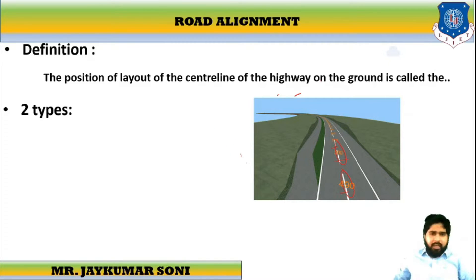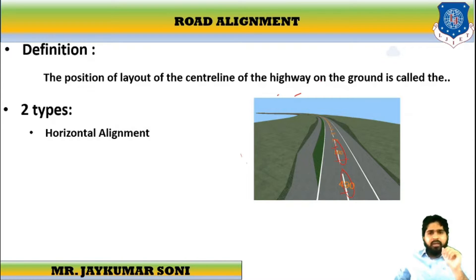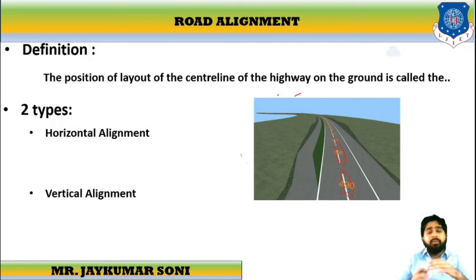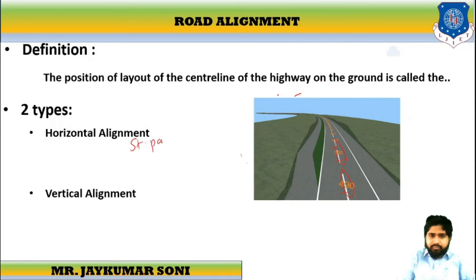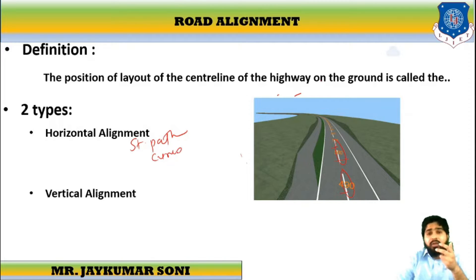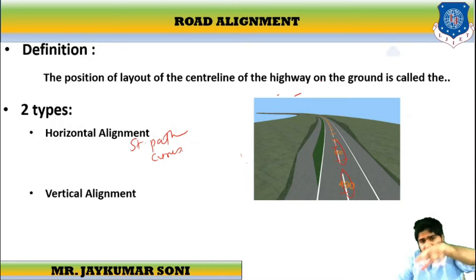There are two types of alignment. First is called Horizontal Alignment and the second one is called Vertical Alignment. Horizontal Alignment means whenever traveling in the linear direction, it includes straight paths, various kinds of curves, and horizontal deviations.